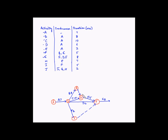Activity H is dependent on the completion of activity E. We can start activity H from event 6, since that node marks the end of E. H has a duration of 7 weeks.